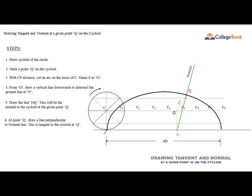Step 6: At point Q, draw a line perpendicular to the normal line. This is the tangent to the cycloid at Q.